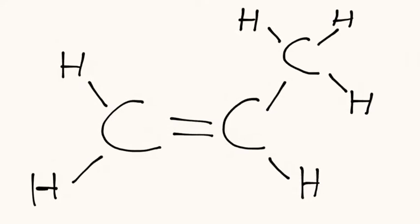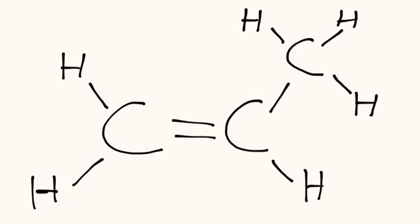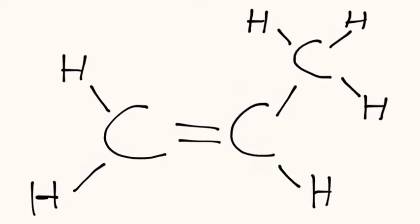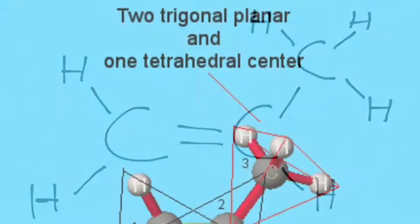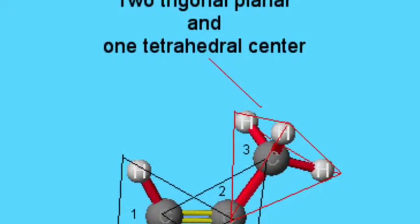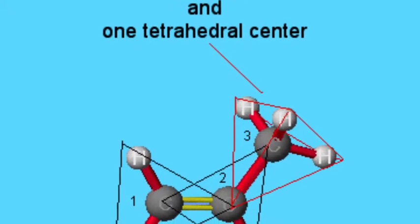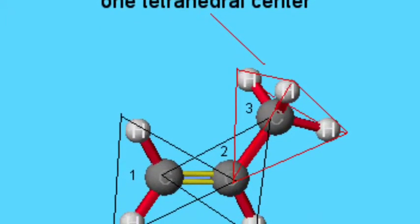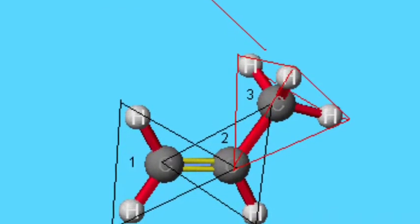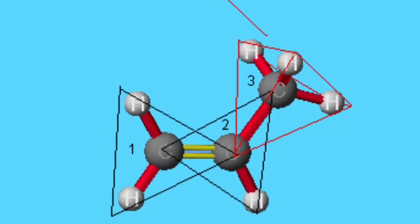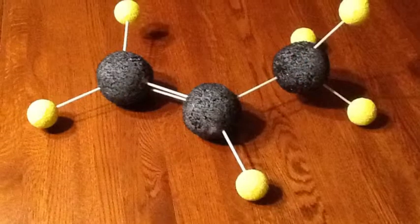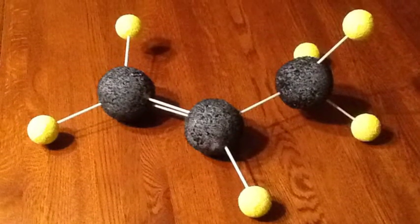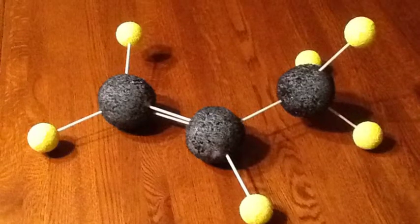I drew this diagram to represent the number and types of bonds between the three carbon atoms and the six hydrogen atoms. This picture shows the three-dimensional shape of a propylene molecule. You can see that there is one tetrahedron and two trigonal planar areas. This is the ball and stick model that I made of a propylene molecule. The carbon is black and the hydrogen is yellow.